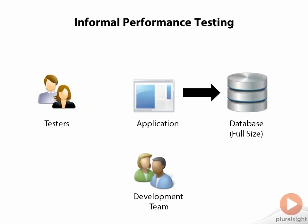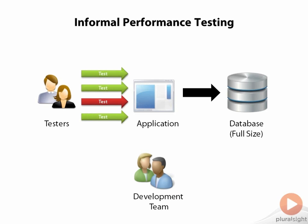Even if you are not conducting formal performance testing, it can still be very valuable to conduct at least some — if not all — of your functional testing against a full-size database that reflects your production data. As your QA staff or business users test the application, they're going to get some feedback about how different functions perform. While the app isn't being tested at full load, it is still better to have some feedback about the performance rather than none. You can identify some areas of high risk in terms of performance and make sure that your testers hit these areas, and you'll get direct feedback from them if a function didn't meet their expectations.